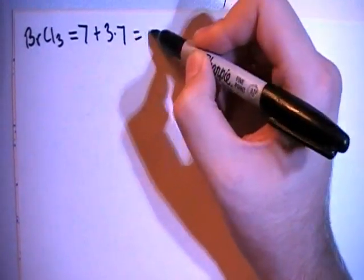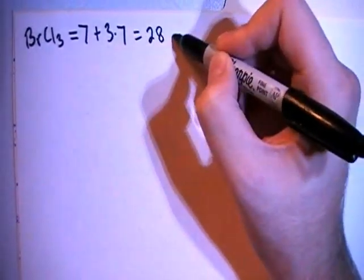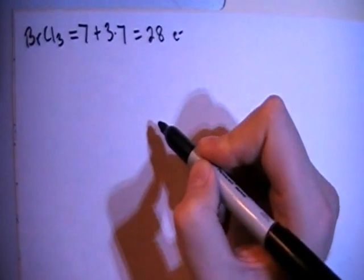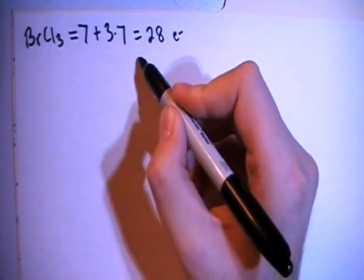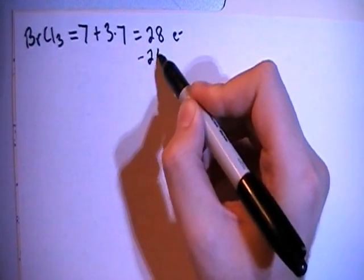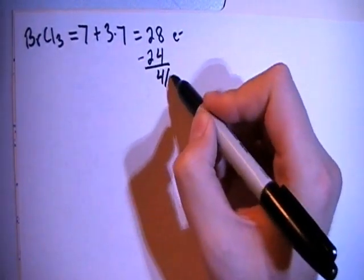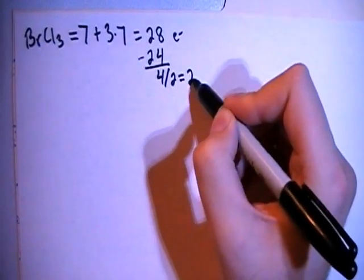And we can go ahead and subtract out the largest multiple of 8, which is in this case going to be 24, which leaves us with 4 electrons remaining, and divide that by 2 to give us 2 non-binding pairs.